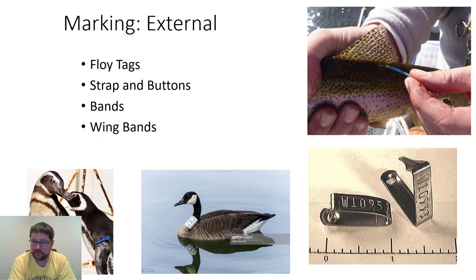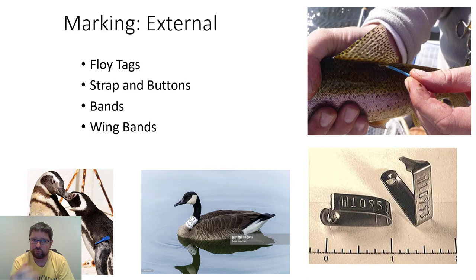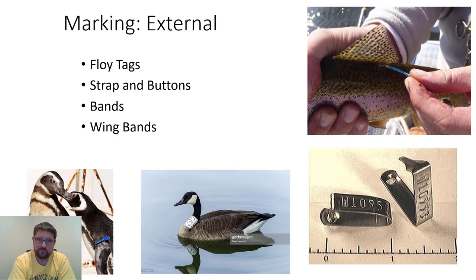Strap or button tags — these are ear tags used for small rodents, sized appropriately to whatever organism you're tagging. You wouldn't put a tiny tag on cattle, and you wouldn't put a large tag on a mouse. In the world of marking organisms, there's a rule of thumb that the tag cannot weigh more than 10% of the organism's weight. If it weighs more than that, it would hamper the organism's ability to move.